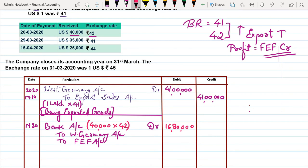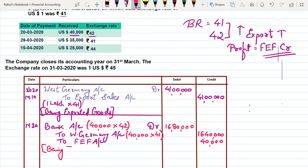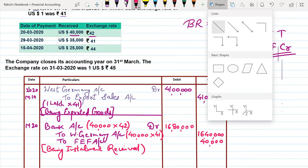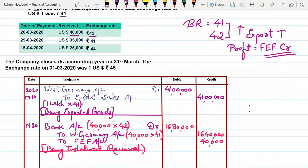For West Germany account, multiply $40,000 × ₹41 (base rate) = ₹16,40,000. The Bank account gets $40,000 × ₹42 = ₹16,80,000. The difference is ₹40,000 which goes to FEF account credit. Narration: Being installment received. Entry No. 2 is complete.